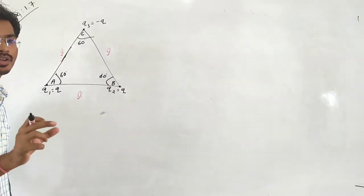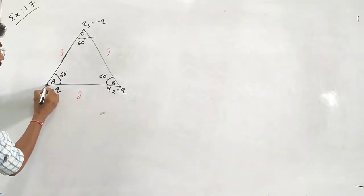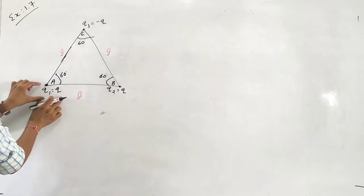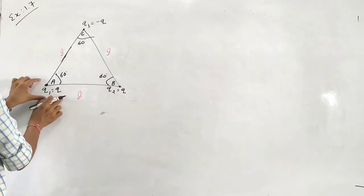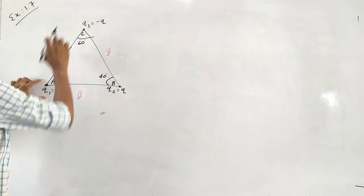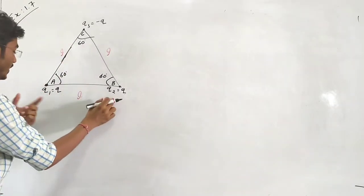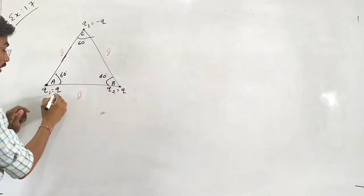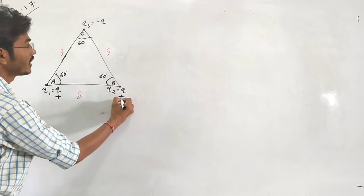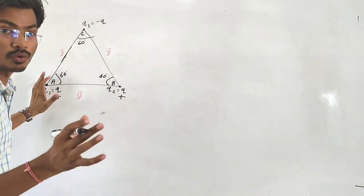At point A, we have charge q1. The other charges are q2 and q3. We first talk about points A and B — both are positive charges. Since both are positive, there is a repulsive type of force between them.